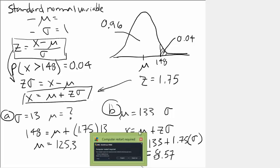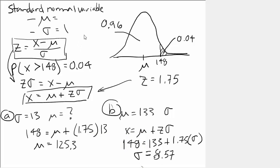So, what did we do? We took our normal random variable, x, and we converted it into a standard normal variable because then we can use our standard normal table and rely on the normal curve and use our standard normal variable to solve for what we need. We knew that the probability of our variable being greater than 148 was 0.04.